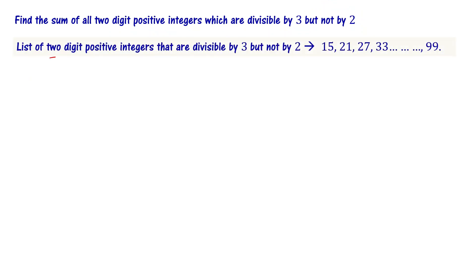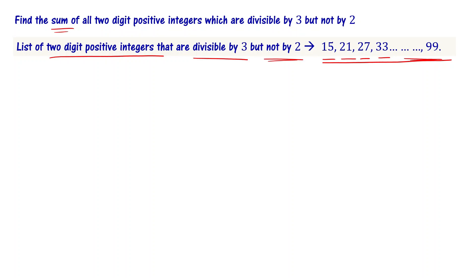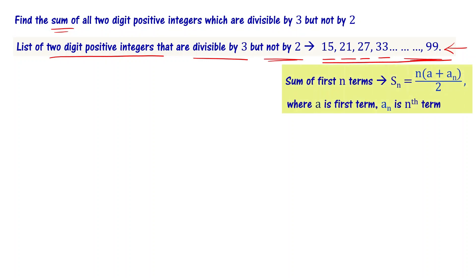The list of 2-digit positive integers that are divisible by 3 but not by 2 are: 15, 21, 27, 33, and so on up to 99. This is an arithmetic progression. The sum of the first n terms of an arithmetic progression is defined as Sn = n × (A + An) / 2, where A is the first term and An is the nth term.